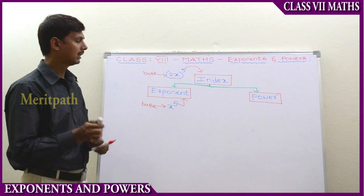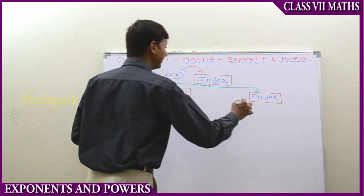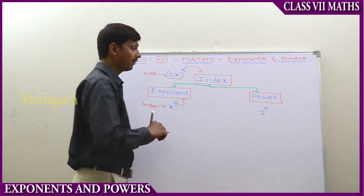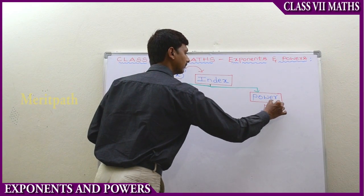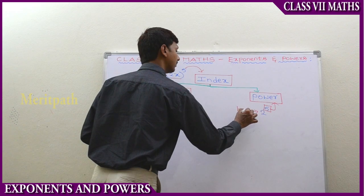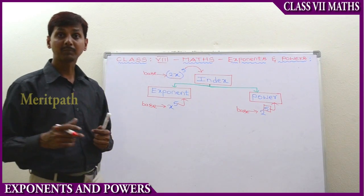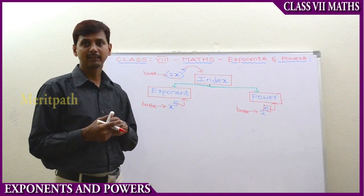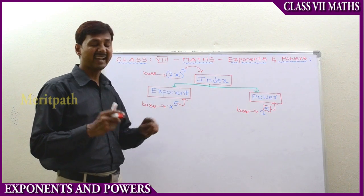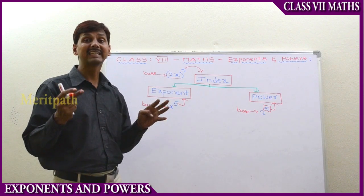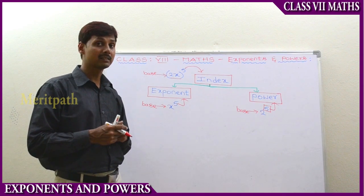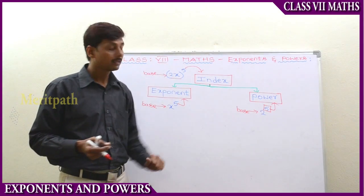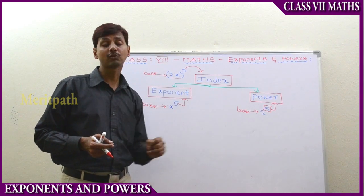Coming to the power: when a constant is raised, like 2 to the power of 5, we call 5 as the power and 2 as the base. So this is the difference: index is used when the base is a combination of variable and constant, like 2x to the power of 5. When a variable is raised, we call it exponent. When a constant is raised, like 2 to the power of 5, the 5 is called power.